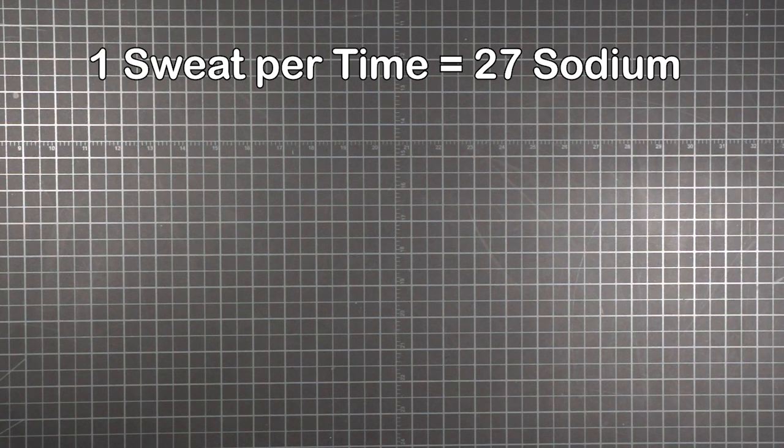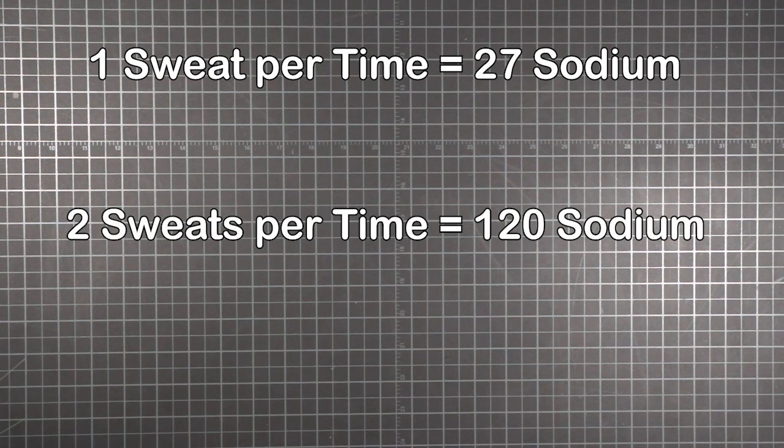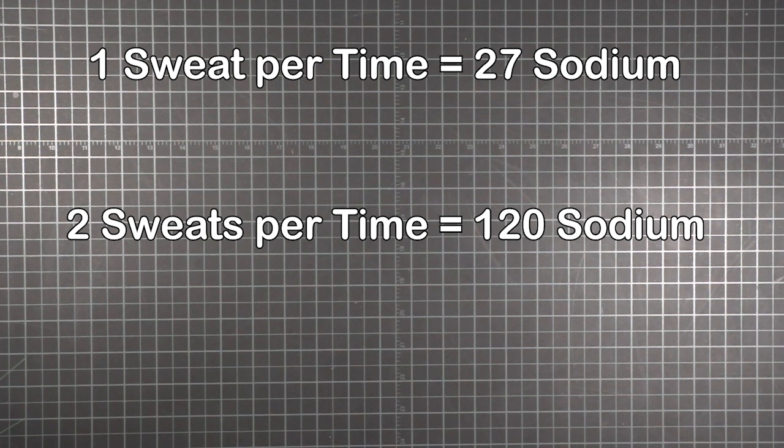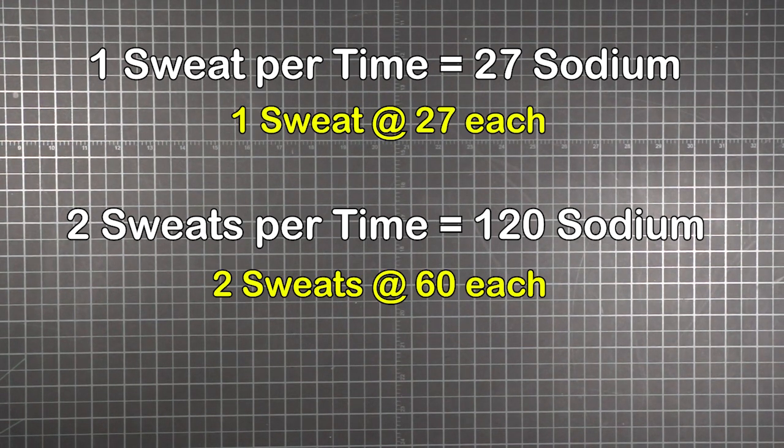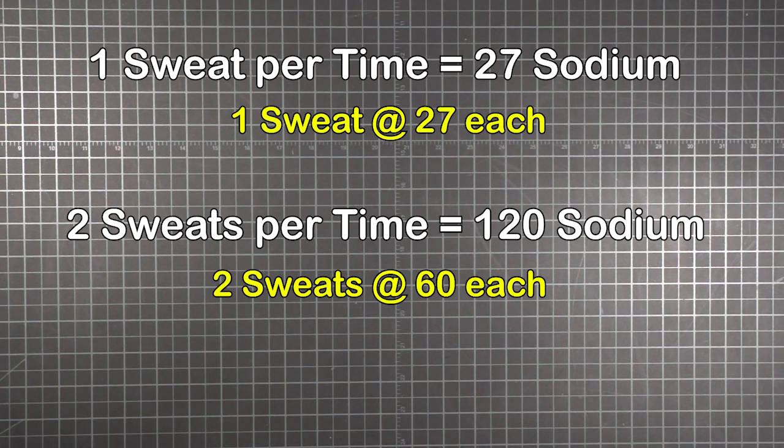So if you sweat one measure of fluid in a given amount of time, you'll lose 27 units of sodium. But if you sweat two measures of fluid in that same amount of time, you'll lose 120 units of sodium. It's more than four times as much because I lost twice as much fluid and each measure of fluid had twice as much sodium.